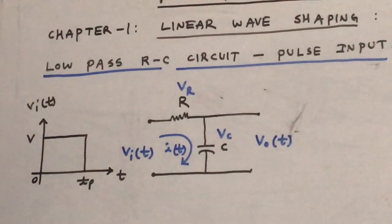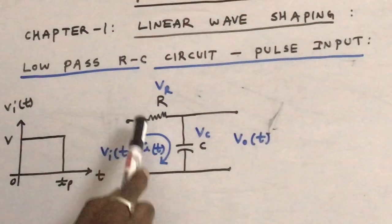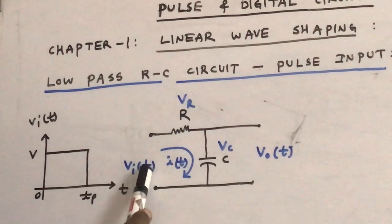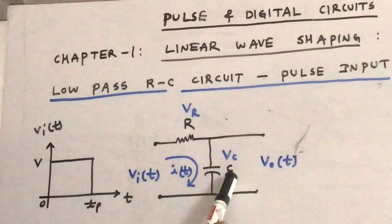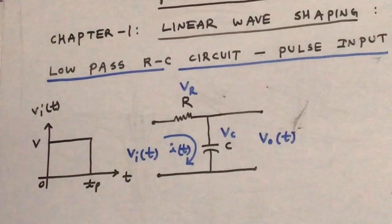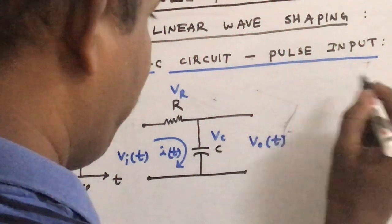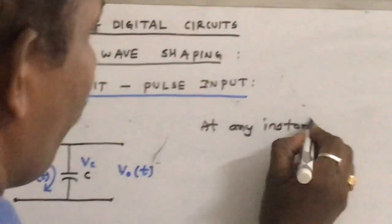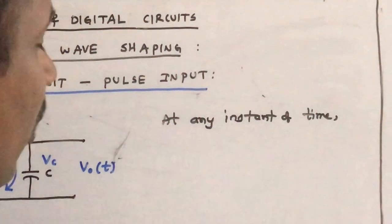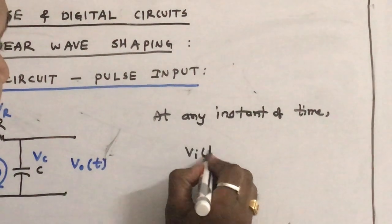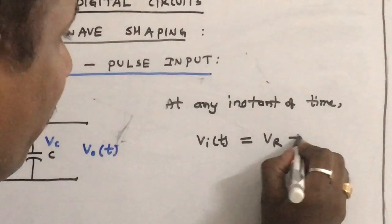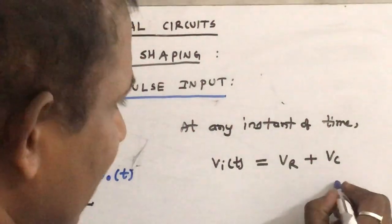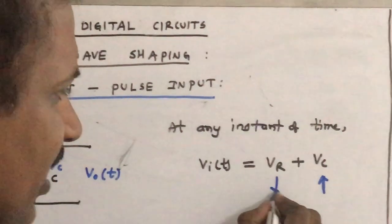Since the circuit consists of only linear and passive elements, at any instant of time the input voltage is equal to Vr plus Vc. That is the fundamental property from KVL. So from any circuit, at any instant of time, Vi of t is always equal to Vr plus Vc. This means if the capacitor voltage increases exponentially, then the resistor voltage decreases exponentially.